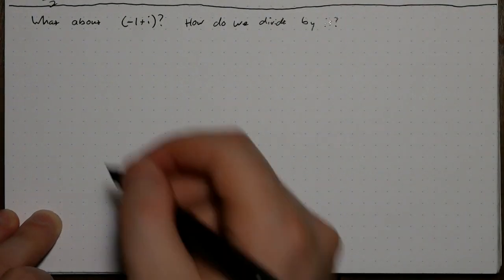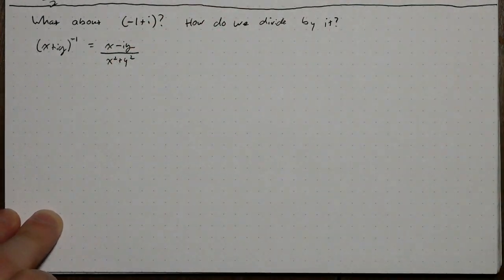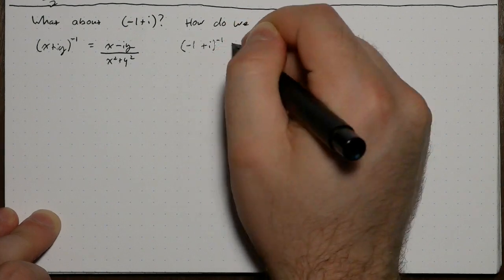Division is just multiplication by a reciprocal, and there's a nice formula for the reciprocal of a complex number. Take the complex conjugate, and divide by the square of the norm. Do that to our base,